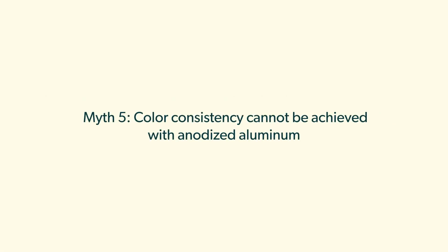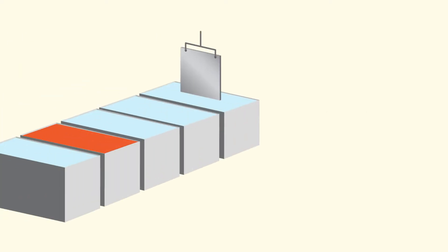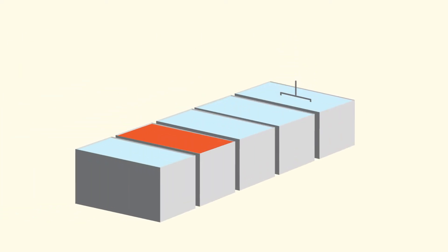This myth is true if the pieces are being produced by batch anodizing, where individual pieces or panels are lowered into each part of the process. Inconsistencies in look and color are created because the top of each piece spends less time than the bottom in each part of the process.